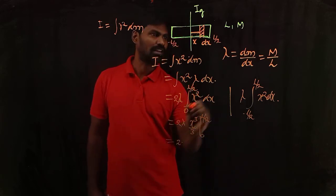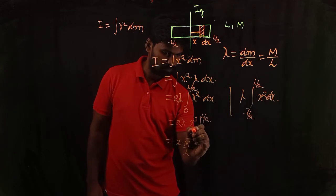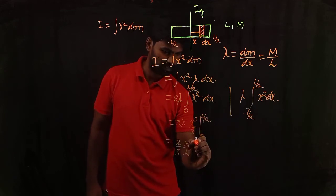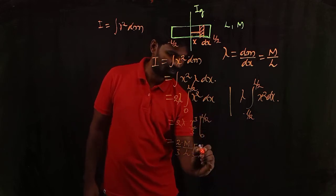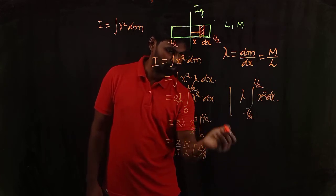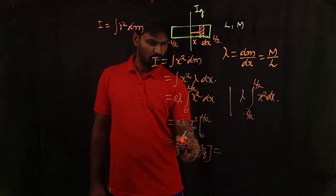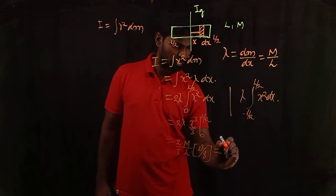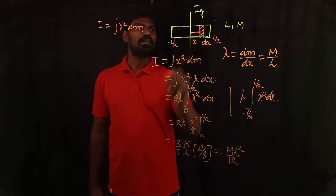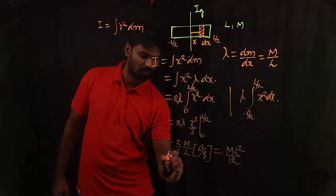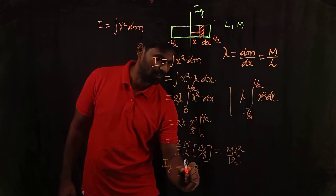Substituting the limits: 2 times lambda, where lambda equals M/L, times (1/3) times (L/2)³. The upper limit gives L³ divided by 8, and substituting 0 gives zero. Simplifying: 2 times (M/L) times (1/3) times (L³/8). The factors reduce to give ML²/12. Therefore, the moment of inertia of this rod with respect to its centroidal axis, perpendicular to the length of the rod, is I_G equals ML²/12.